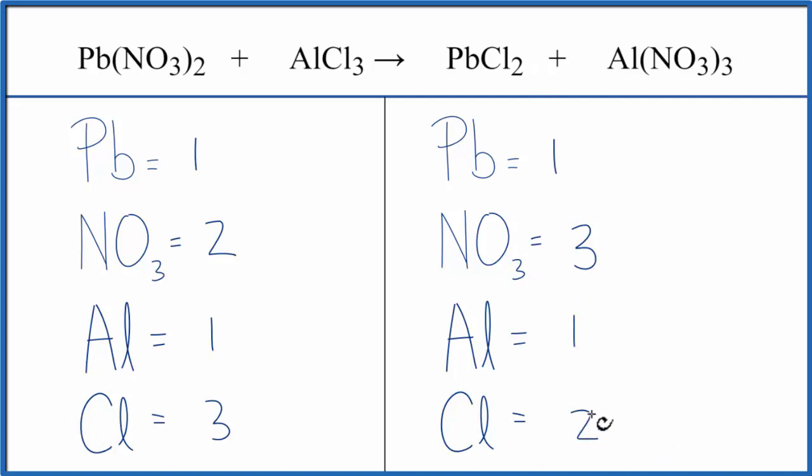Let's fix the chlorines first. If I have an odd number, I like to get that to be an even number. That makes balancing a lot easier. So I'm going to put 2 in front of the AlCl3. 3 times 2, that gives us 6. So we have an even number there. And then aluminum is 1 times 2. That gives us 2 aluminums.